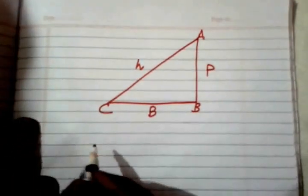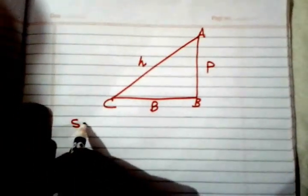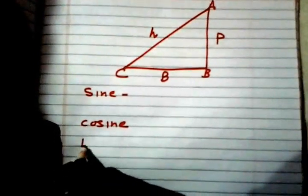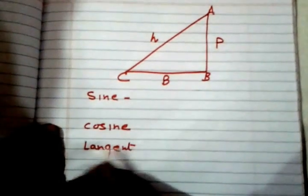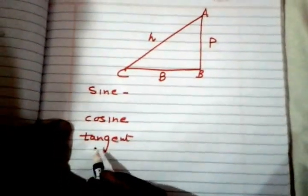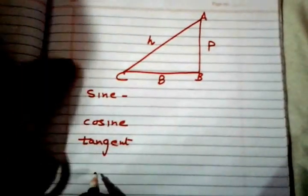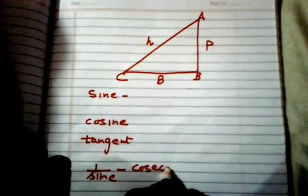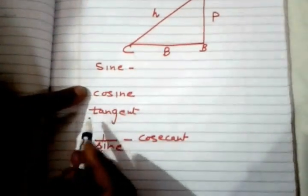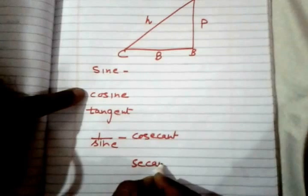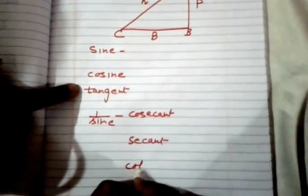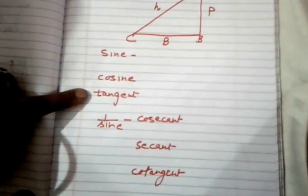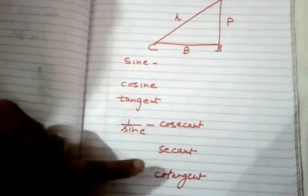In trigonometry there are three: sine, cosecant, then cosine. Opposite or reciprocal you can say, secant. And tangent, reciprocal is called cotangent. Let me repeat it: sine, cosine, tangent. Reciprocal of sine is called cosecant, reciprocal of cosine is called secant, reciprocal of tangent is called cotangent.